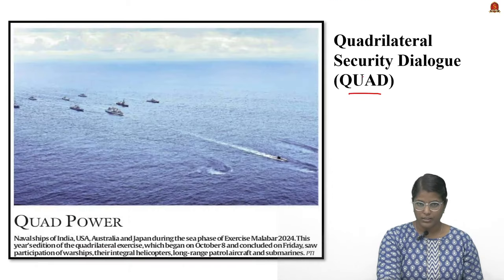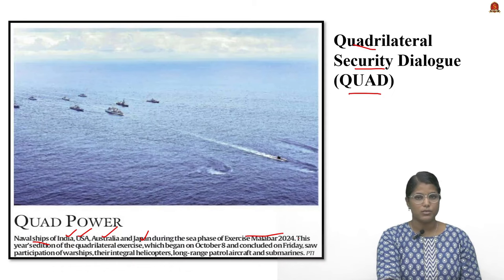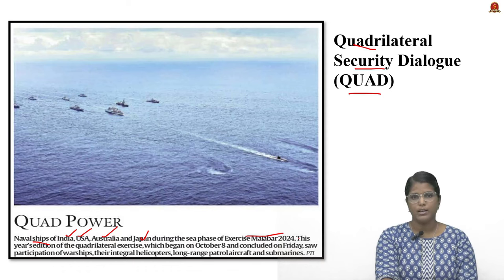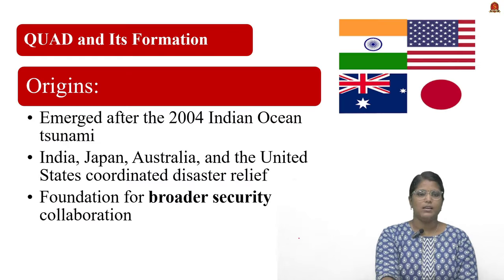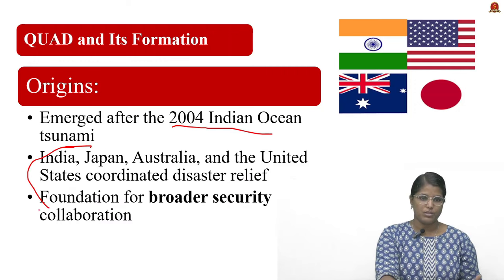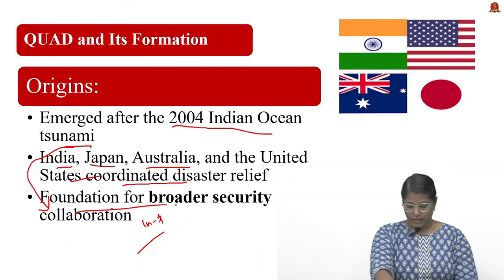The next news article is about QUAD — the Quadrilateral Security Dialogue. The news is that naval ships of member countries — India, US, Australia, and Japan — have come together for the Malabar Exercise 2024. QUAD emerged after the 2004 Indian Ocean tsunami, with its main focus being to coordinate disaster relief and lay a foundation for broader security collaboration in the Indo-Pacific region.